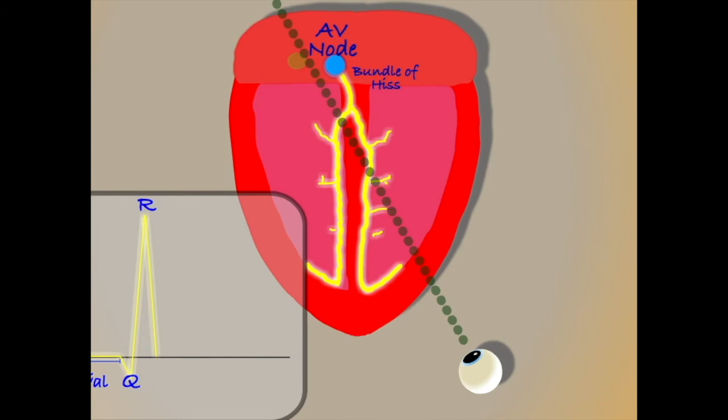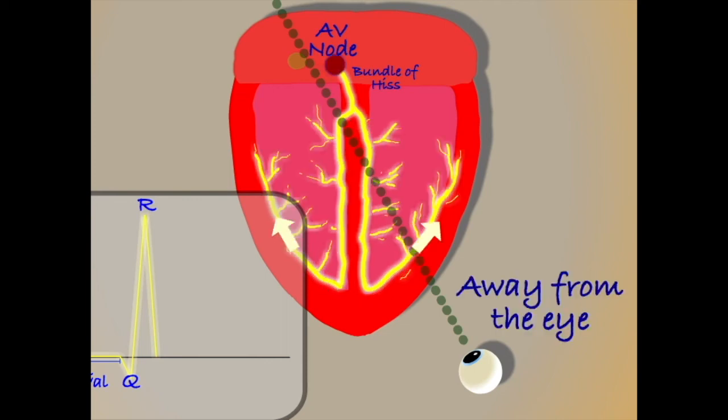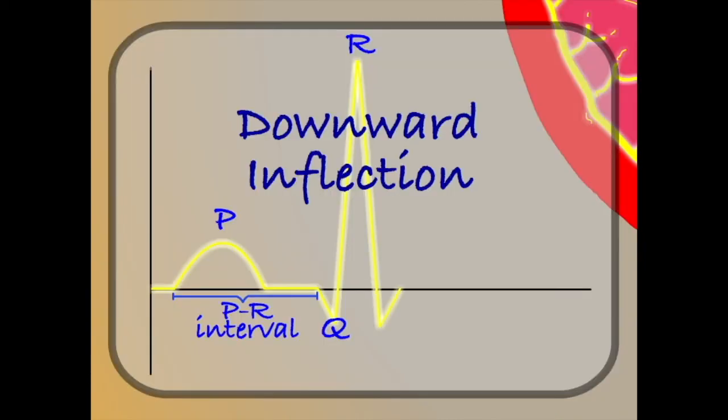Finally, the left and right bundles will carry the electrical impulse around the left and right walls of the ventricle, taking the electrical impulse away from the eye. This will give us another downward inflection, which we will label S.